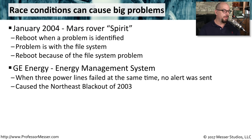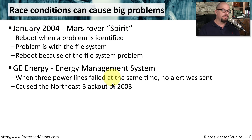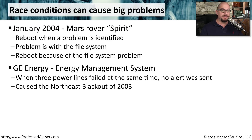GE Energy also had a race condition with their energy management system. This happened when the management system that is supposed to identify problems ran into a situation where three power lines failed simultaneously. You ultimately had a race condition where none of those three events were able to get through because all three were waiting for the other one to complete. Because nobody was able to see these alert messages, this ultimately caused the Northeast blackout of 2003, where 10 million people in Ontario and over 45 million people in the United States were without power. In some areas, it took a week or two for power to be restored.